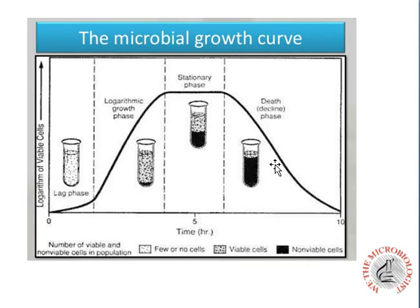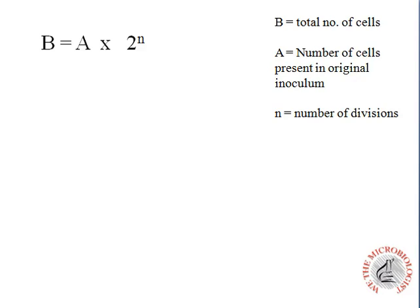Now we will move on to the calculations, which are very important during the research process. The first formula for calculating the total number of cells in the medium is: B equals A times 2 to the power n. Here, B is the total number of cells, A is the number of cells present at the origin — the number of cells you initially provided into the medium — and n represents the number of divisions.